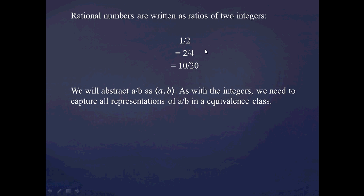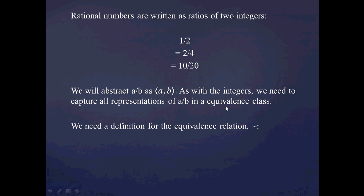So what we're going to do is very much in line with the integer construction. We're going to abstract the notation a over b as the ordered pair (a, b). And since our representations aren't unique, we're going to have to capture all the representations of a over b in the form of an equivalence class. That means we need to set up a definition for an equivalence relation — a criterion by which we judge whether two rational numbers are really the same or equivalent.